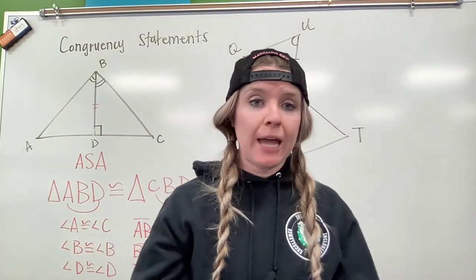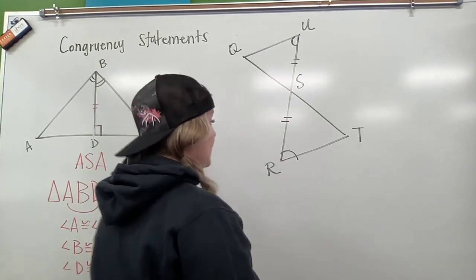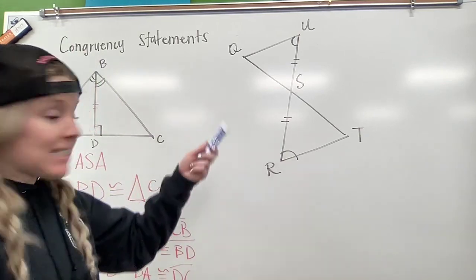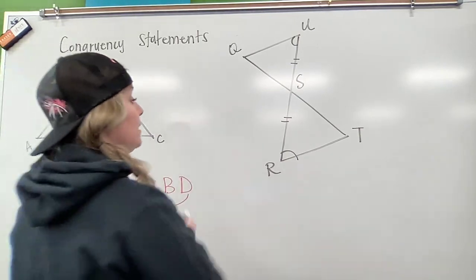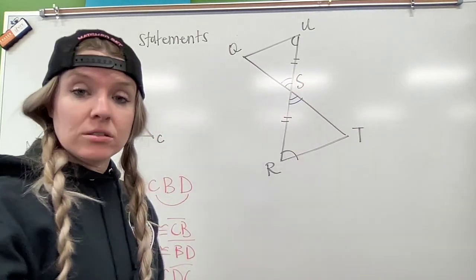Okay. So we've got one more here. We've got to find a missing information because all we know is an angle and a side. So in this case, we have vertical angles again. So we know that these angles are congruent. They are vertical angles.